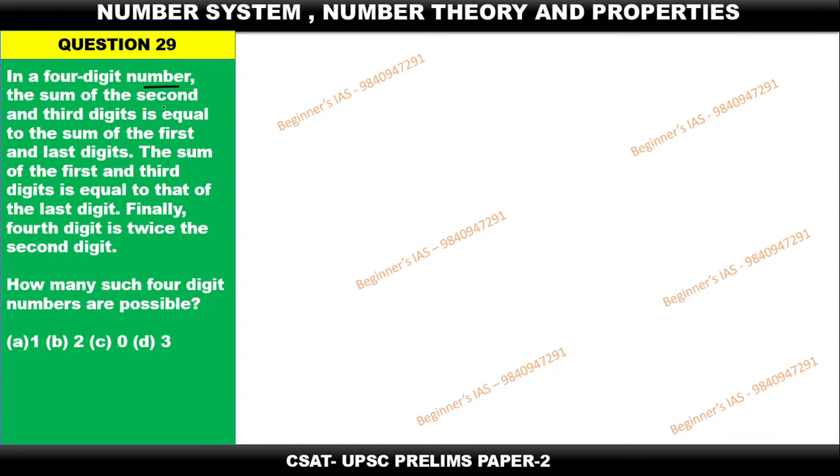In a four digit number, the sum of the second and third digit is equal to the sum of the first and last digit. The sum of the first and third is equal to the last. Finally, the fourth digit is twice the second. How many such four digit numbers are possible?